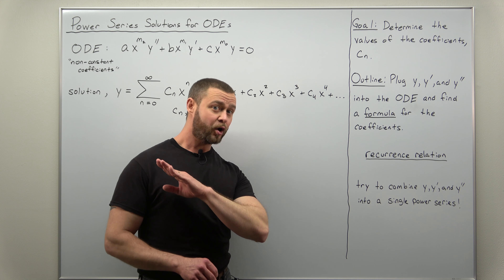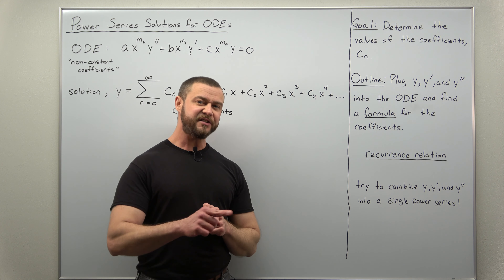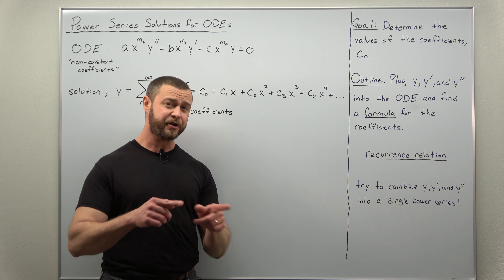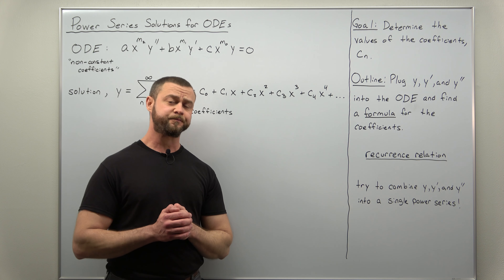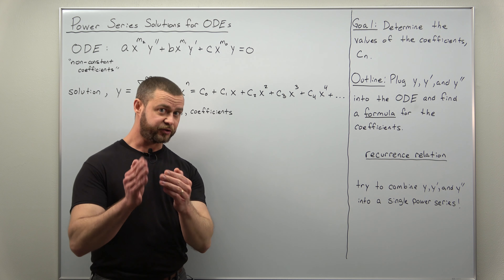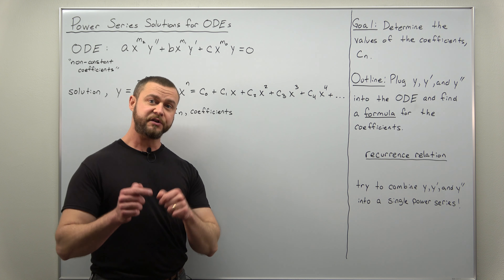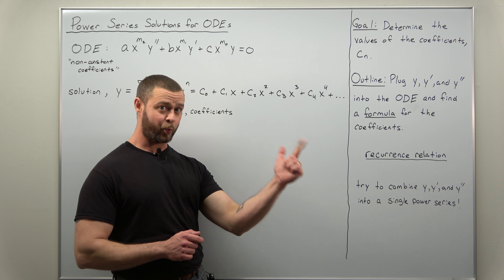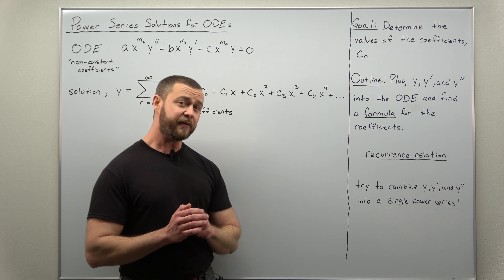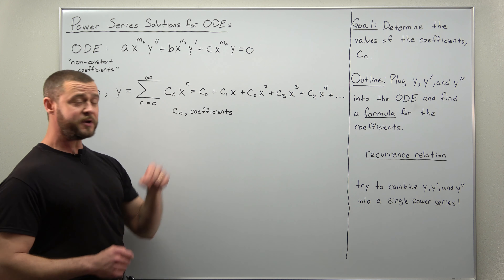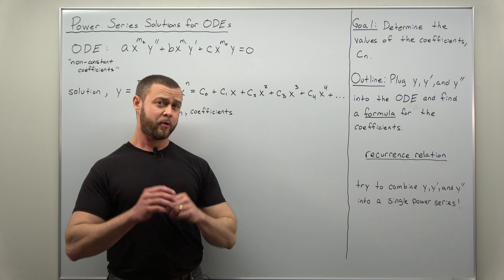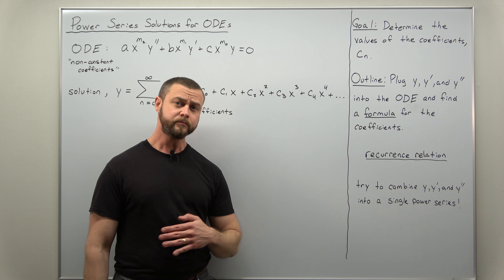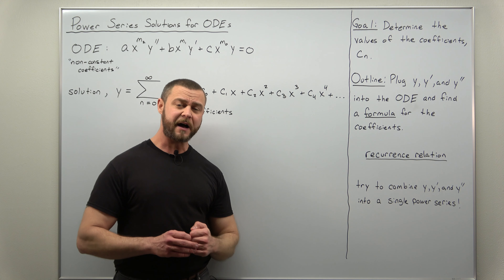Ideally we want to be able to determine all of them, but in your science and engineering courses you might only determine the first few coefficients depending on the accuracy needed for your problem. How we actually determine those values — that's where the work lies. With Y as a power series, we get a power series representation for Y prime and Y double prime, and once we have all three of those power series we plug them into the ODE and try to find a formula for the coefficients. That formula is usually called the recurrence relation, and it's a formula that lets you determine as many values for the coefficients as you want.